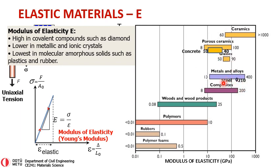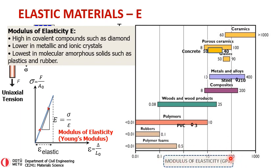Concrete's modulus of elasticity can range from 10 to about 40 gigapascals. Steel has a modulus of elasticity of about 210 gigapascals. Another example from polymers: PVC, often used in window frames, can have a modulus of elasticity of about 3 gigapascals. The unit of modulus of elasticity is expressed as a stress unit, most often in gigapascals — 10 to the power of 9 — emphasizing that it's a large number.